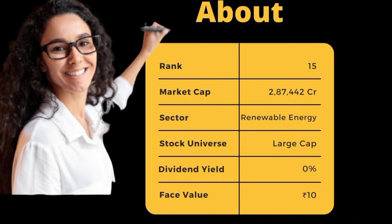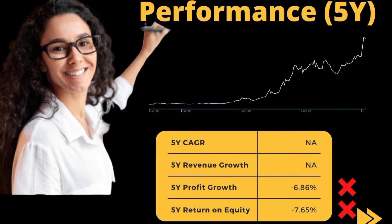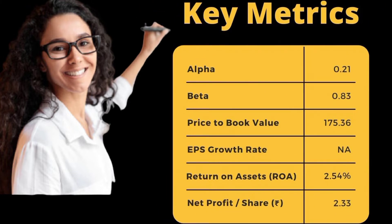Sector: renewable energy. Stock universe: large cap. Dividend yield: zero percent. Face value: 10 rupees. Five year performance — five years CAGR: nil, five years revenue growth: nil, five years profit growth: minus 6.86 percent, five years return on equity: minus 7.65 percent. Key metrics — alpha: 0.21, beta: 0.83, price to book value: 175.36.